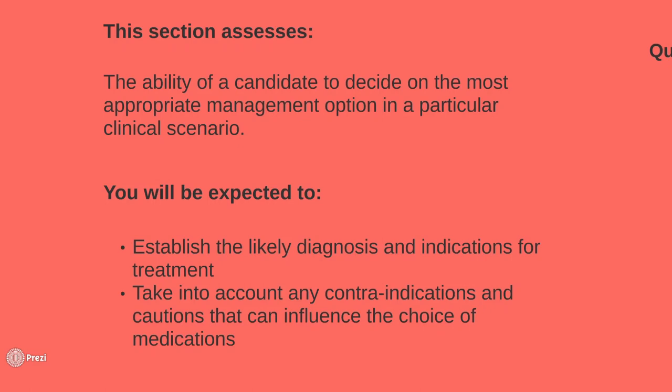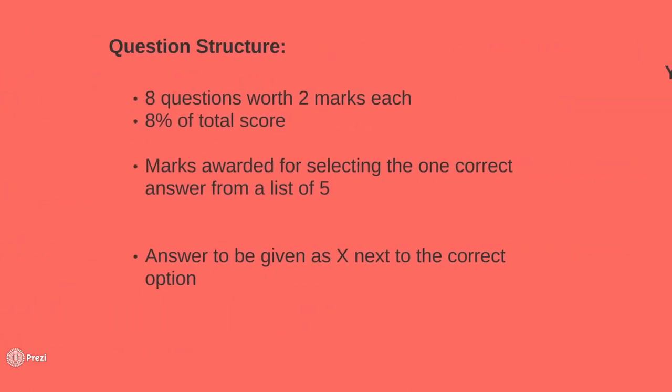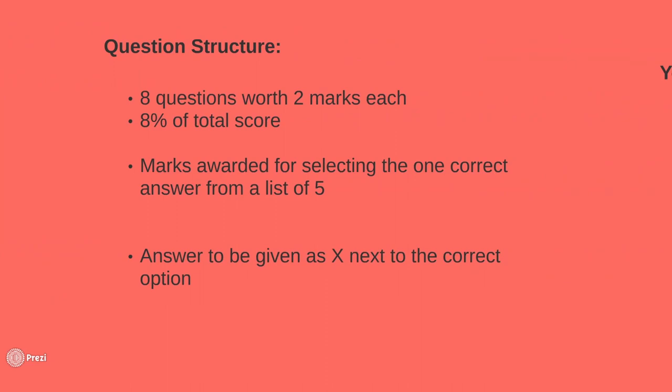It is also possible that all options are true, but one of them must be the most important or most appropriate. There is no 'all of the above' or 'none of the above' type of answers. Within the PSA, this section is worth 16 marks, which accounts for 8% of the total 200 marks available. It consists of 8 questions, each worth 2 marks. Only one answer is correct and partial marks are not available.